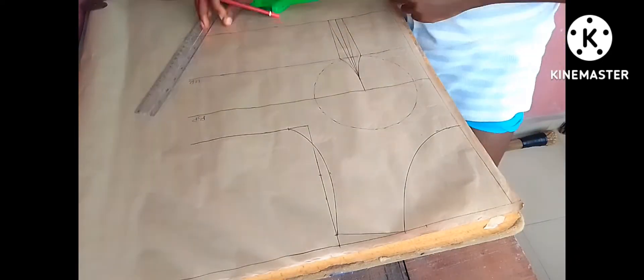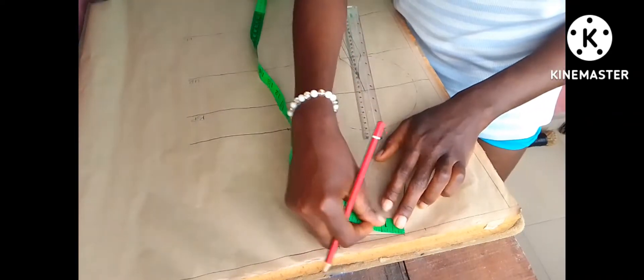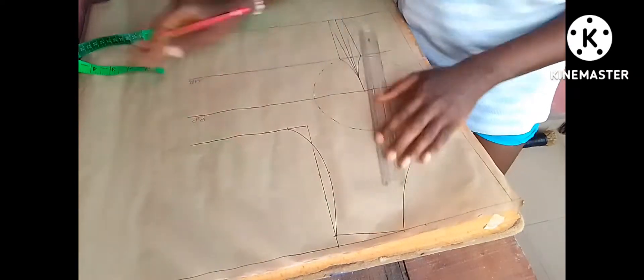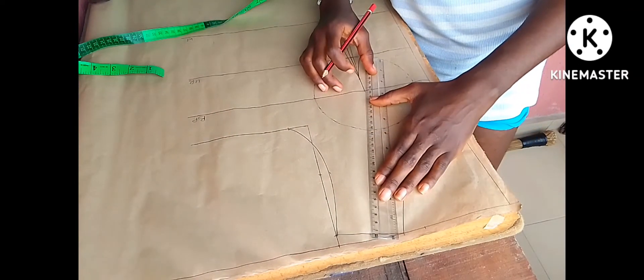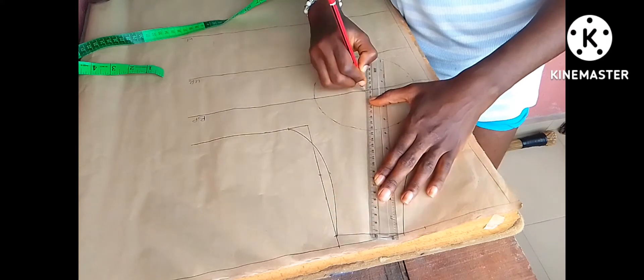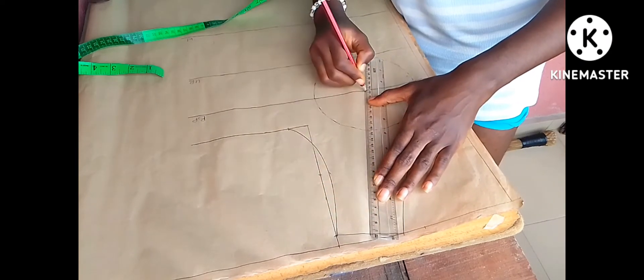Then I went ahead to create a shoulder dart. It is not too important but it is there for a guide. So I'll just divide my shoulder into two and connect it down to my bust point to meet the nipple to nipple measurement like you see me doing.